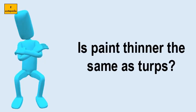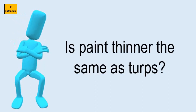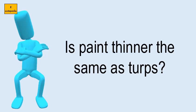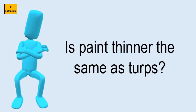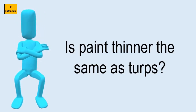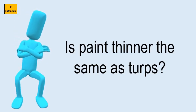Is paint thinner the same as turps? Both can be used to thin oil paint to affect the flow of paint onto the canvas. They can also be used to clean brushes and other tools. Commercially, the term paint thinner is rather broad, and can cover many solvents like mineral spirits, naphtha, even turpentine.